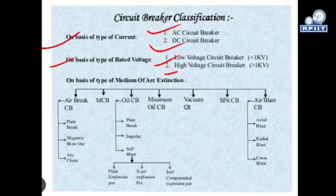Another important category is based on the medium of arc extinction — which can be air, oil, gases, or air blast. Based on this, there are three broad categories of circuit breakers: air, oil, and gases, with air blast medium as well.